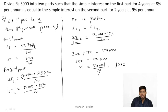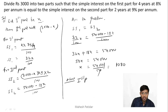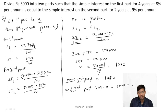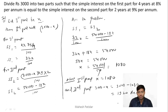First part = ₹1080 and second part = 3000 − 1080 = ₹1920. Hence our answer: first part is ₹1080 and second part is ₹1920.